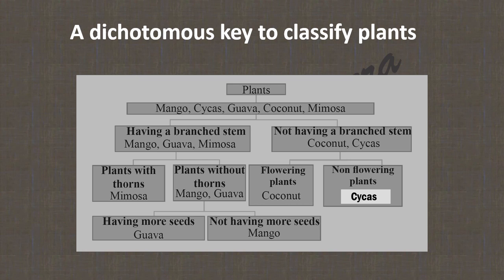Now describe the features of the plants. Guava: has a branched stem, no thorns, and has more seeds. Cycas: no branched stem and is a non-flowering plant.